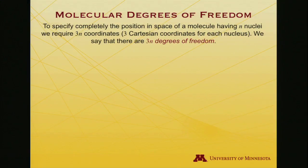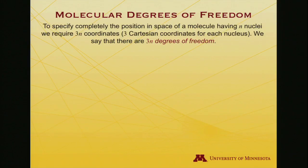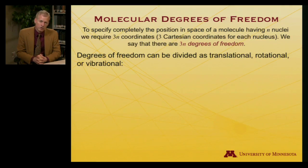If I want to specify completely the position in space of a molecule that has n nuclei, I must need 3n coordinates — there's an x, a y, and a z coordinate for each atom, and if there are n atoms, that's 3 times n. So we refer to that as 3n degrees of freedom, which dictate specification of every atomic position. Degrees of freedom can be thought of as being subdivided into translational, rotational, or vibrational components.